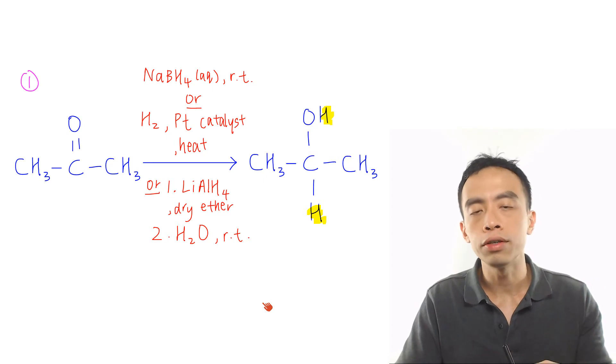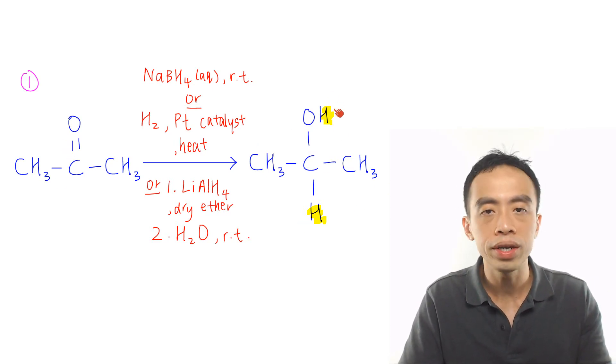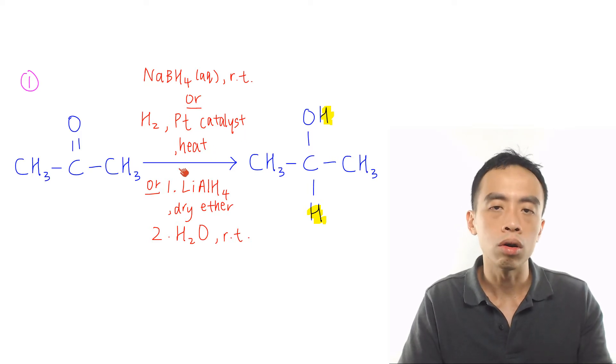The first must-know reaction of ketones would be the reduction of ketones to give us a secondary alcohol. Now this is done using NaBH4 aqueous at room temperature or H2 in platinum catalyst heat or lithium aluminum hydride in dry ether followed by water at room temperature.